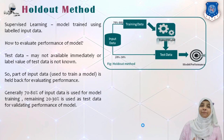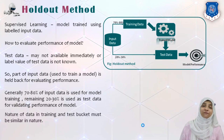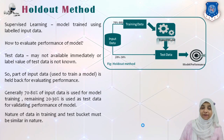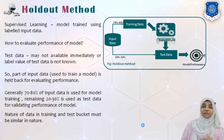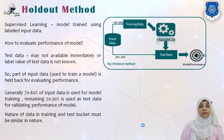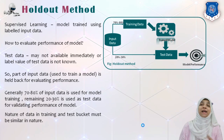It might happen that test data is not immediately available, or the values of test data may not be known at the time of testing. So at the time of training a model, we hold out some part of the training data. That's why this method is called the Holdout Method.